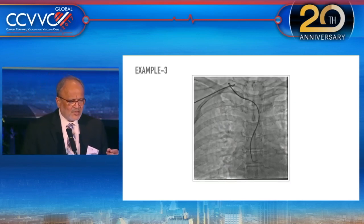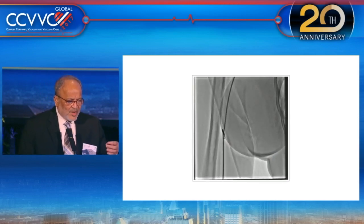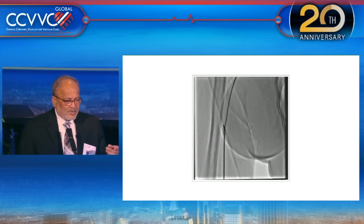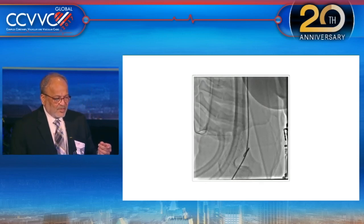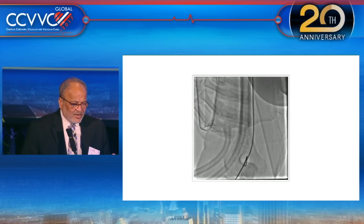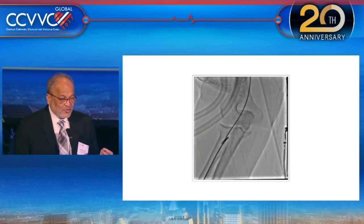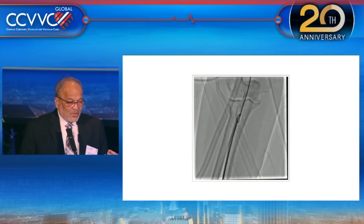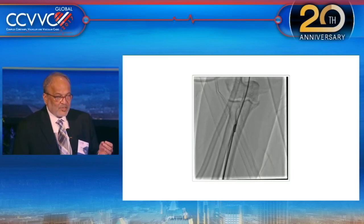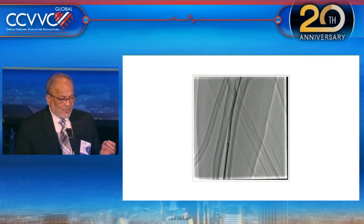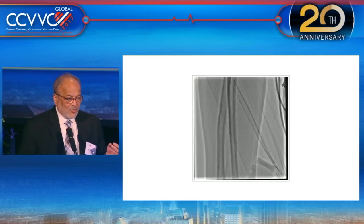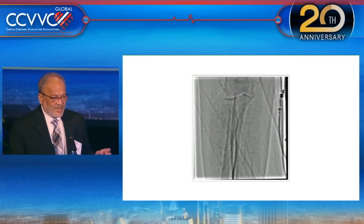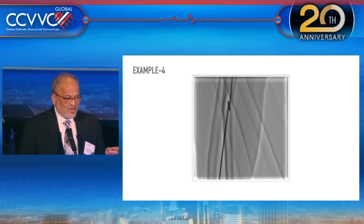Another example of a catheter knot dealt with similarly: the catheter was brought down just below the elbow, the blood pressure cuff was inflated at high pressure, and under fluoroscopic guidance the knot was reduced. We have to be careful because it can lead to some injury, so every removal was followed by injection under fluoroscopic guidance to make sure no damage was done.